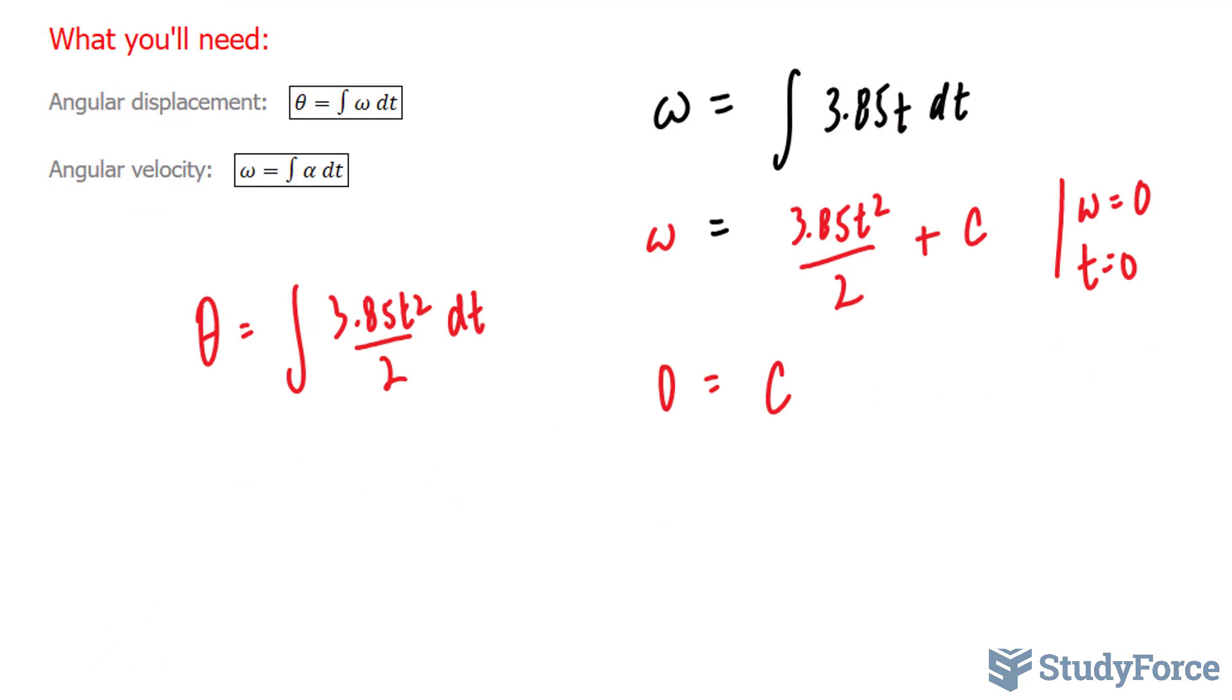To find the integral of this, it's not hard. Once again, I'll add 1 to the exponent, and this sum, which is 3, I'll divide the whole function by, giving me theta equals 3.85 t to the power of 3 over 6, plus c, our constant.